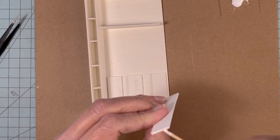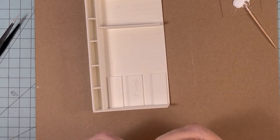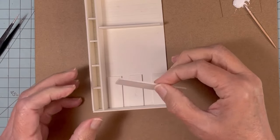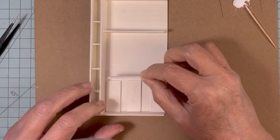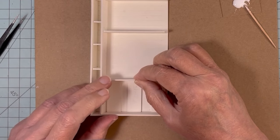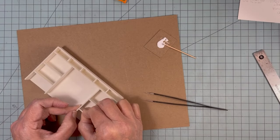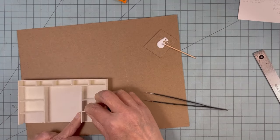I'm using the shelves as a guide for placement of the dividers between the shelves. I forgot to mention in the beginning of the video that all of the pieces are cut from four layers of cardstock. Here I'm gluing in the shorter shelves.